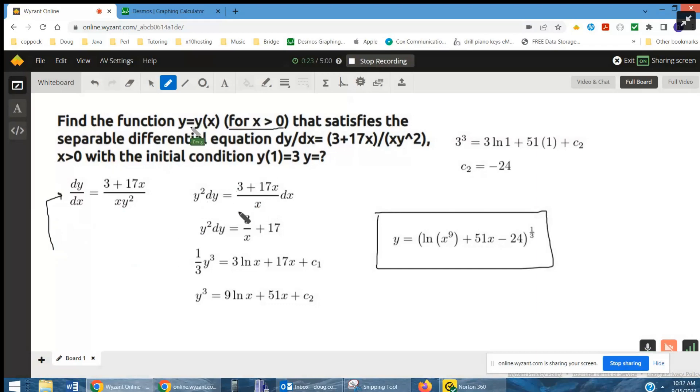Define the antiderivative of this 3 plus 17x over x. Divide x into each term of the numerator. The antiderivative of y squared is one-third y cubed.